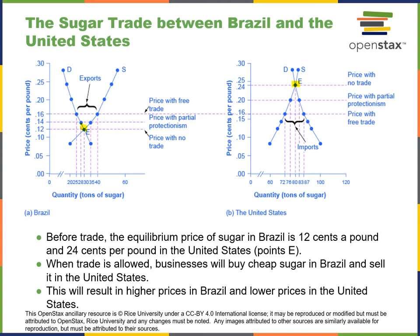Brazil produces much cheaper sugar in this example, so there'll be a certain amount of imports allowed. We don't want to cut out everybody who produces sugar in the United States, so there'll be some allowable amount of import. When trade is allowed, this will result in higher prices in Brazil and lower prices in the United States, but maybe both parties can stomach it — and that's where the agreement point comes from.